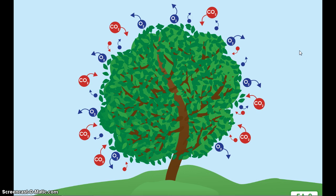Trees provide us with many things and perform tasks that you may not even be aware of. For example, trees provide us, humans, with oxygen to breathe. Trees also take in carbon dioxide through their leaves. Carbon dioxide is a greenhouse gas, meaning that if too much of it builds up in the earth's atmosphere, our planet will heat up. Therefore, trees are important to helping manage the earth's climate and keeping it livable for us.